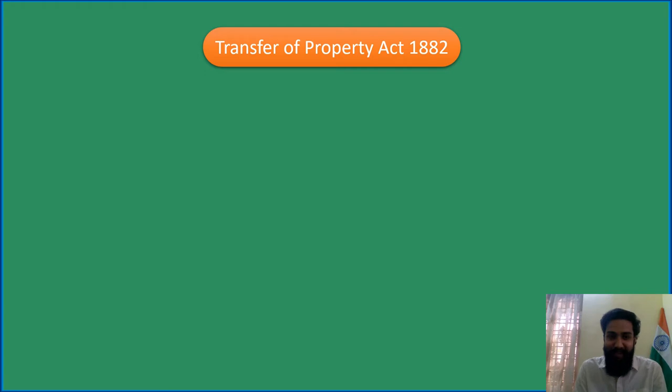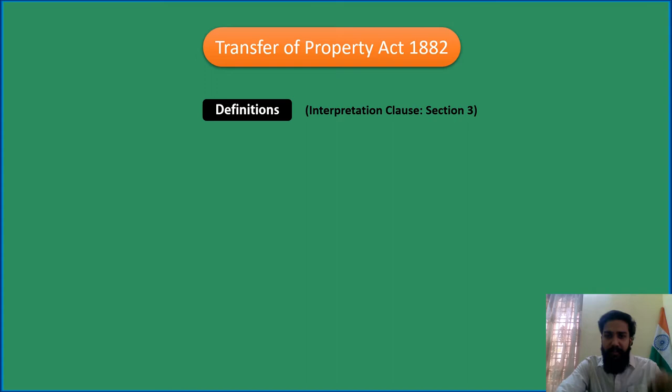Hello and welcome to Law Fiscal. Transfer of Property Act 1882, Definitions, Interpretation Clause Section 3. Section 3 has some definitions that we should know before going into detail about the Transfer of Property Act. Some of the definitions include Immovable Property — what is Immovable Property — and there are many cases related to Immovable Property.